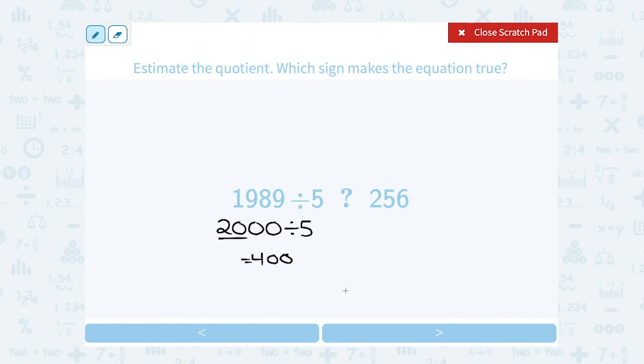Well, a little bit smaller than 400 is still bigger than or greater than 256.